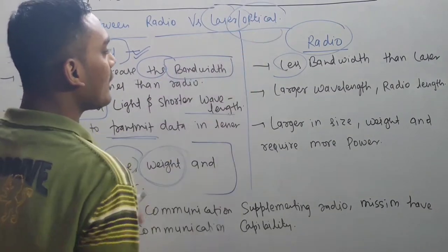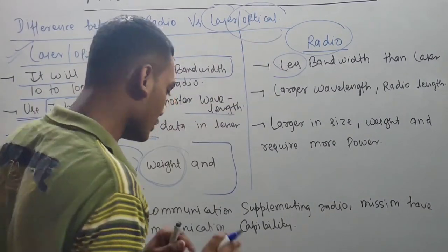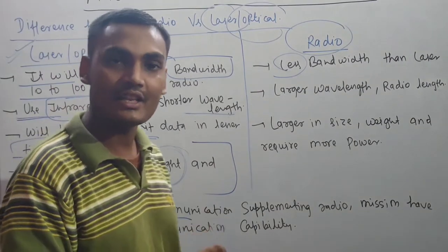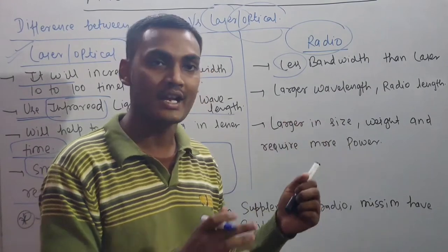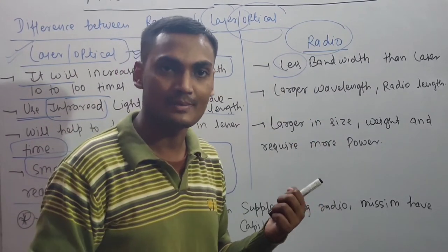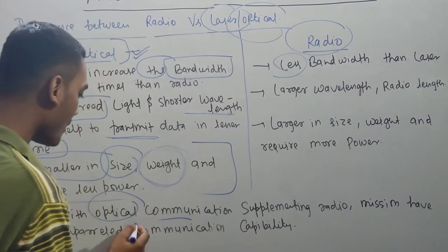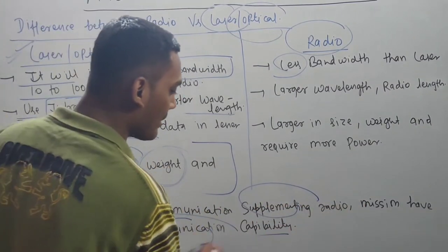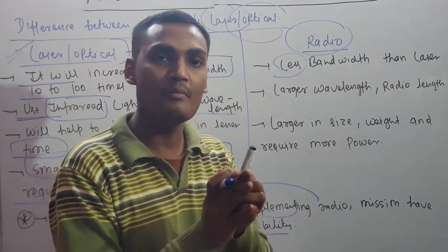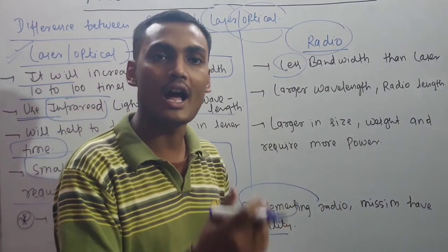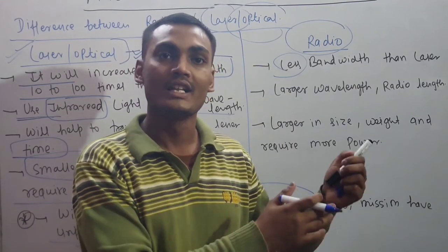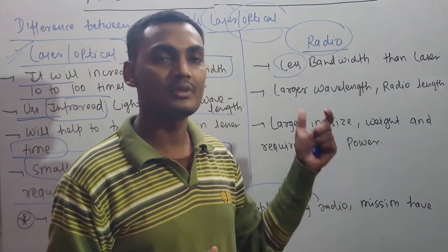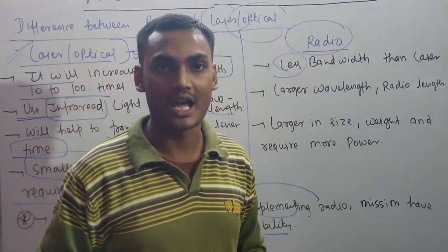Optical communication is still at a very nascent stage — this is the first-ever satellite of this kind in space. In the future, optical communication will supplement radio missions, creating an unparalleled communication capability. A combination of optical and radio will be more advantageous than using radio frequency alone. That's all about the NASA LCRD mission.